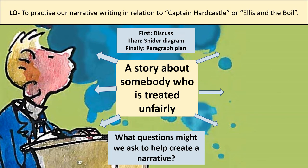Now, your task for today is going to be about a story about somebody who is treated unfairly. I'd like you to first have a rough idea — maybe think of some examples of times that you've been treated unfairly, or instances where people at school have been treated unfairly. Then I'd like you to do a spider diagram, for which you've got space in your workbook. You're going to write down some ideas: who in your story is going to be treated unfairly? Who are they going to be treated unfairly by?